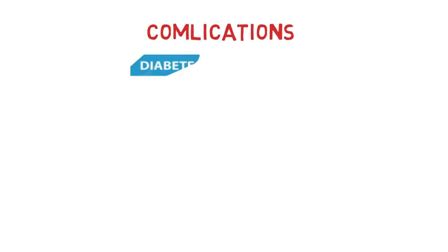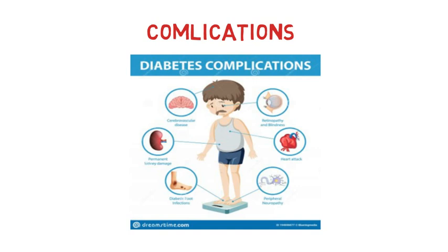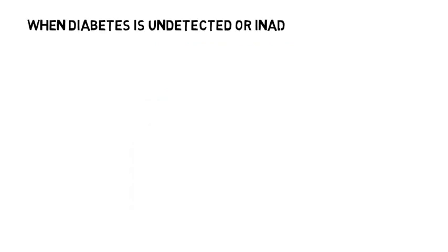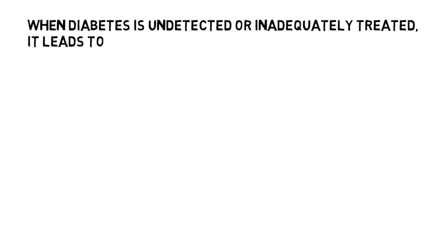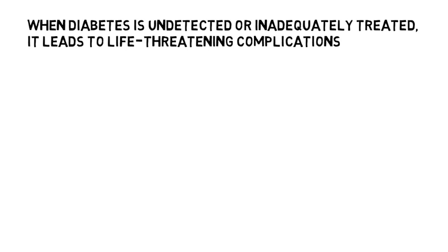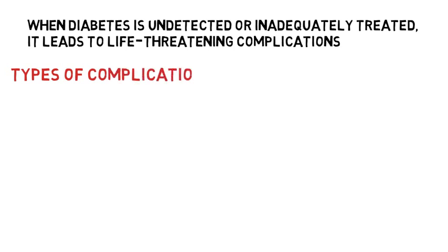Now let's discuss the last point from today's episode: complications of diabetes mellitus. When diabetes goes undetected or is inadequately treated, it can lead to a number of life-threatening complications. Diabetic complications are divided into two major types: microvascular complications and macrovascular complications.